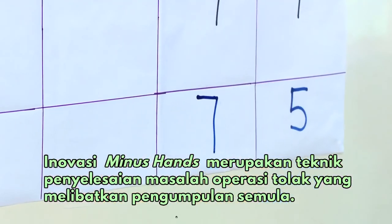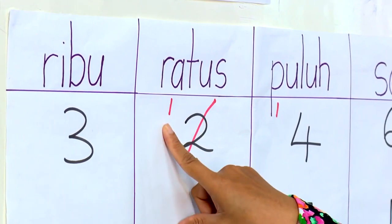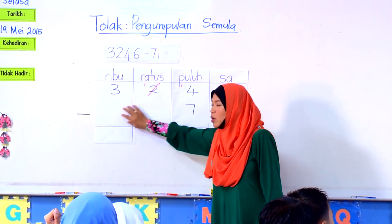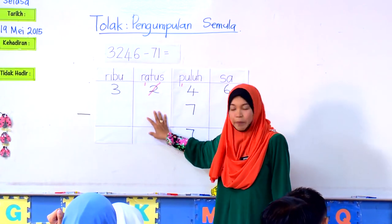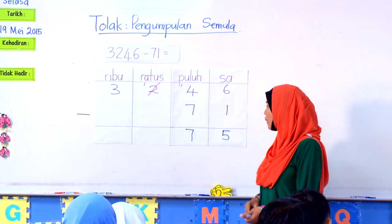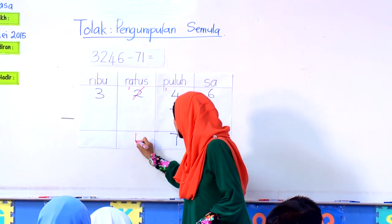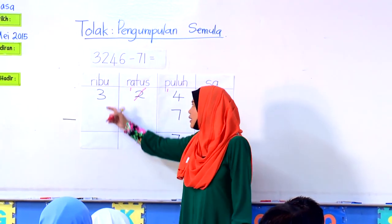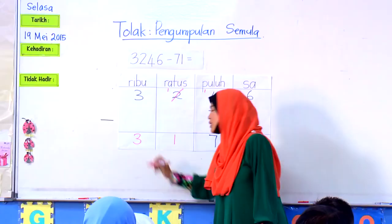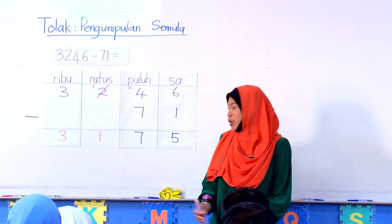Seterusnya, kita pergi kepada rumah ratus. Tadi kita dah pinjam 1, maka tinggal 1. Ada nombor ke yang perlu kita tolak di bawah ini? Tak ada. Jika tak ada, maka apa yang kita perlu buat? Salin sahaja. Iaitu 1 dan yang 1000? 3. Salin seperti biasa. Boleh? Boleh.